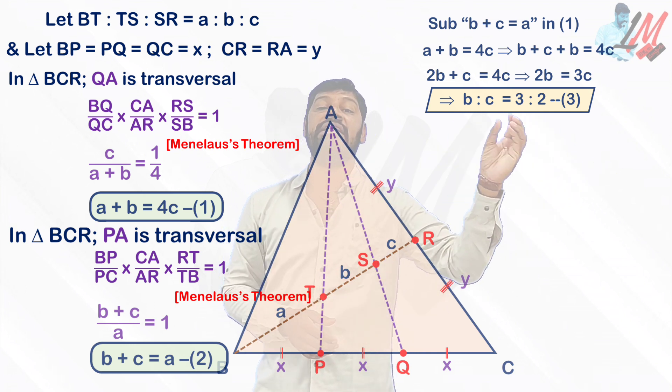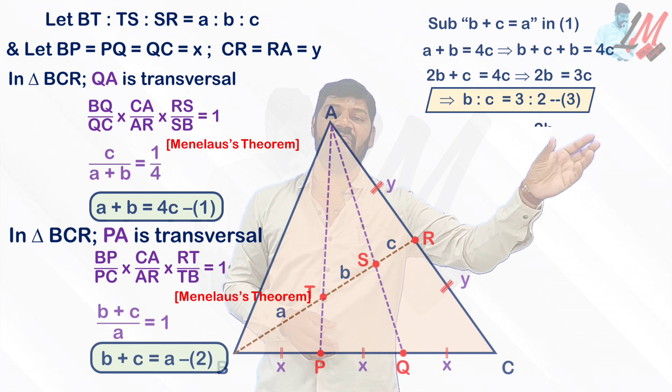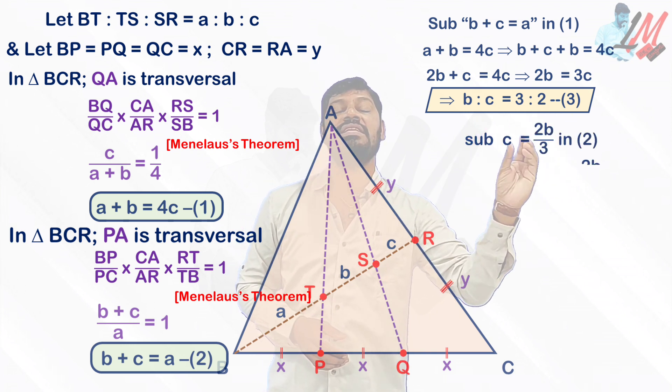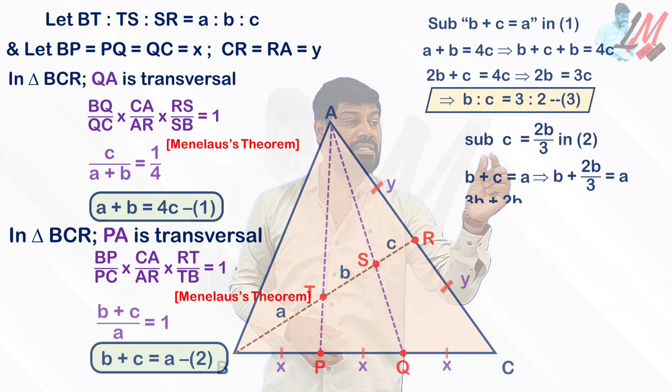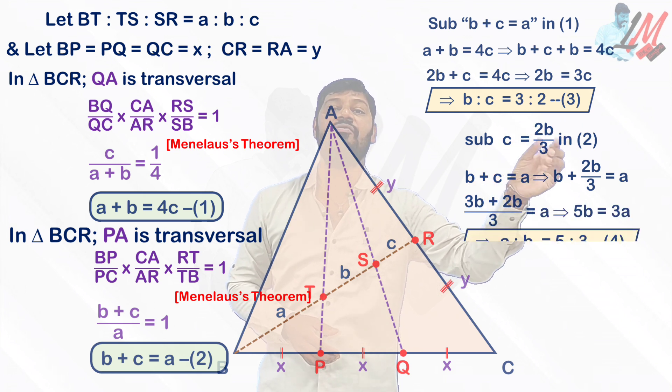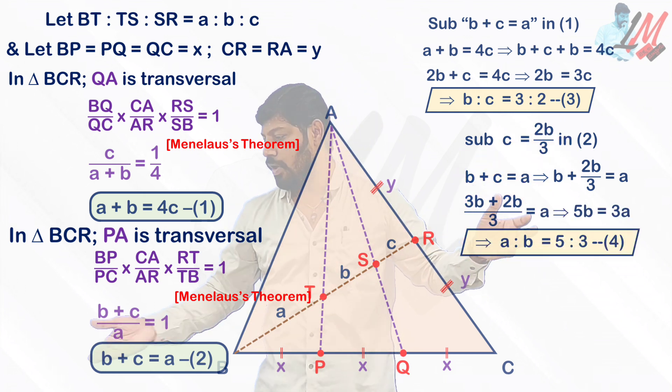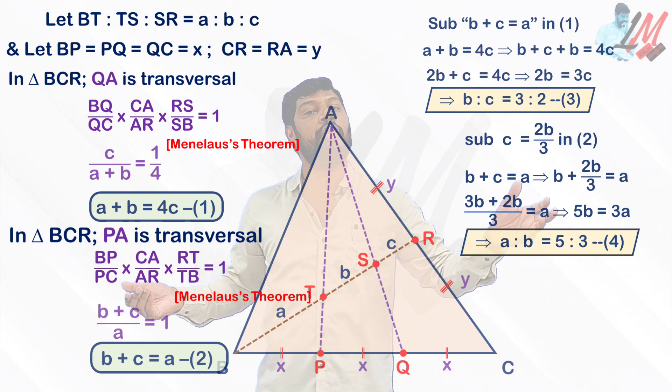Just here I am concentrating writing the value of C in terms of B. If you write, you are going to get C equal to 2B by 3. C equal to 2B by 3, if you do substitute in second equation, whatever we got B plus C equal to A.